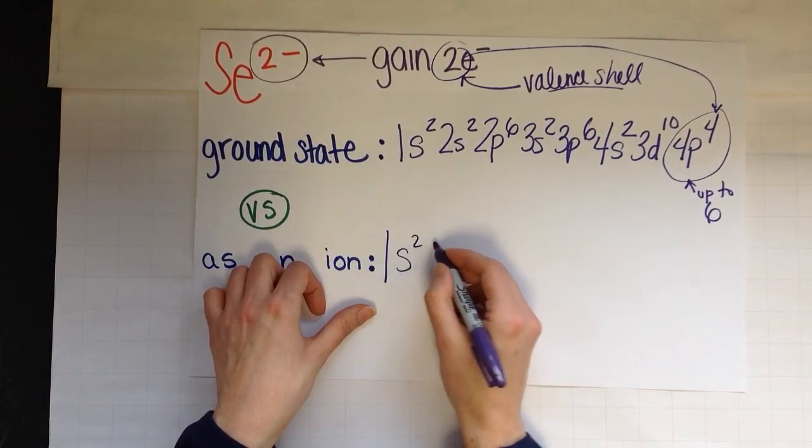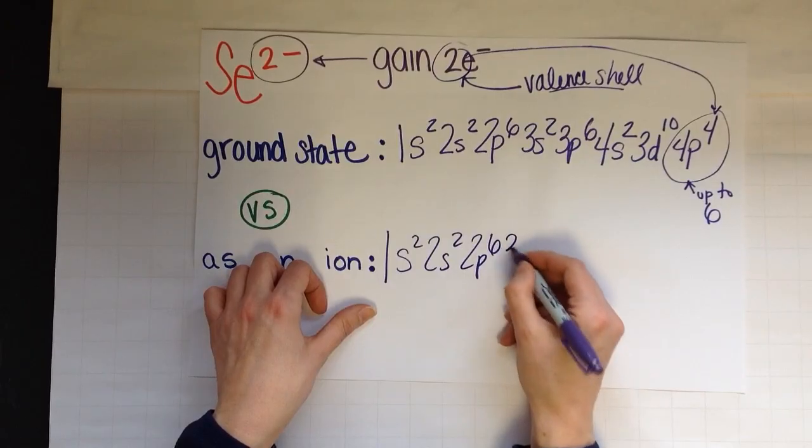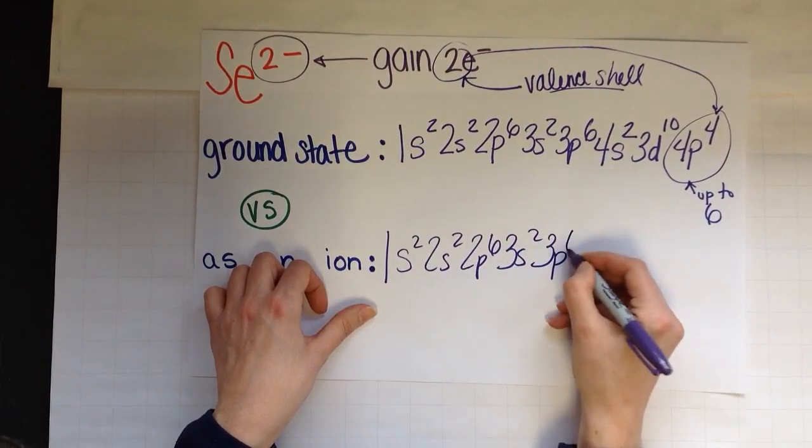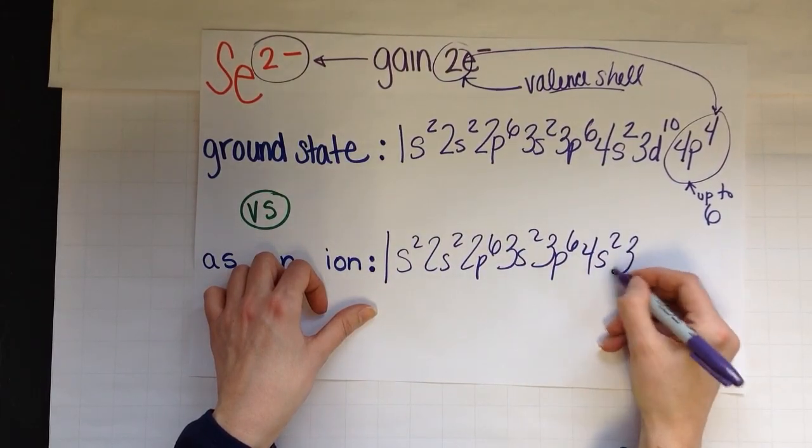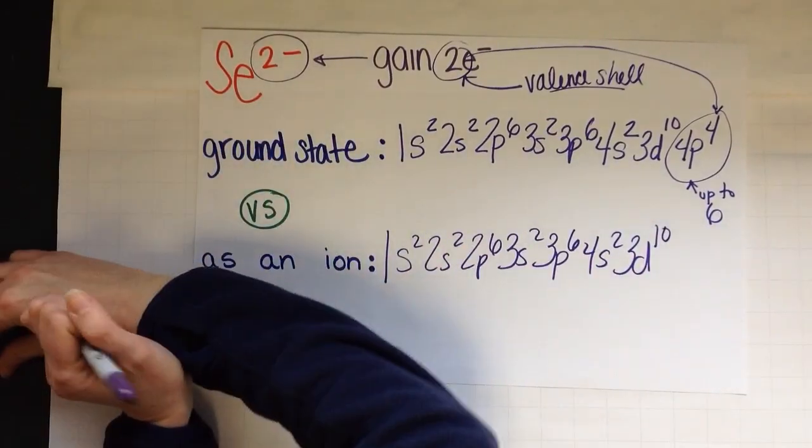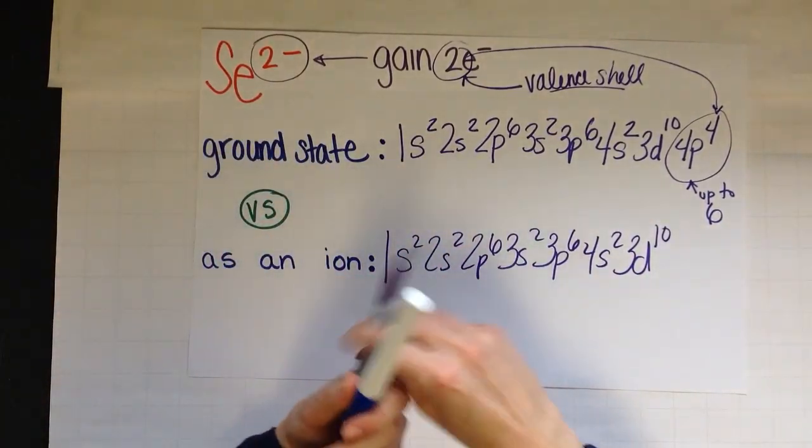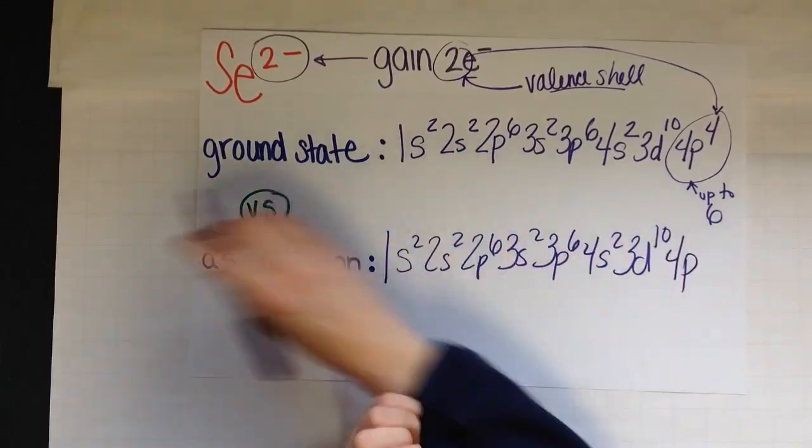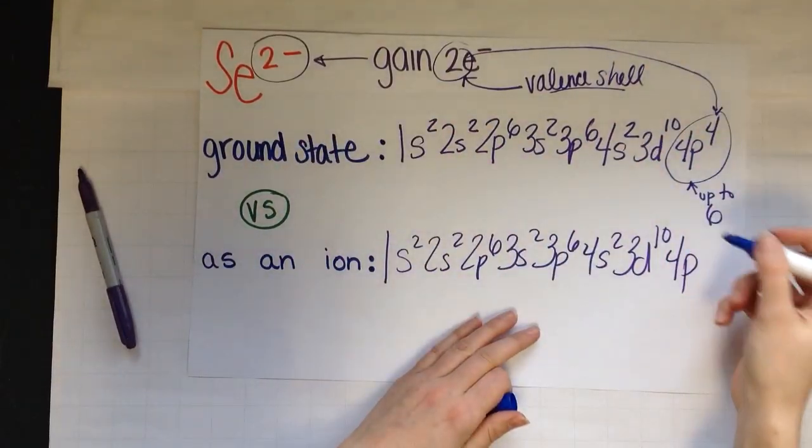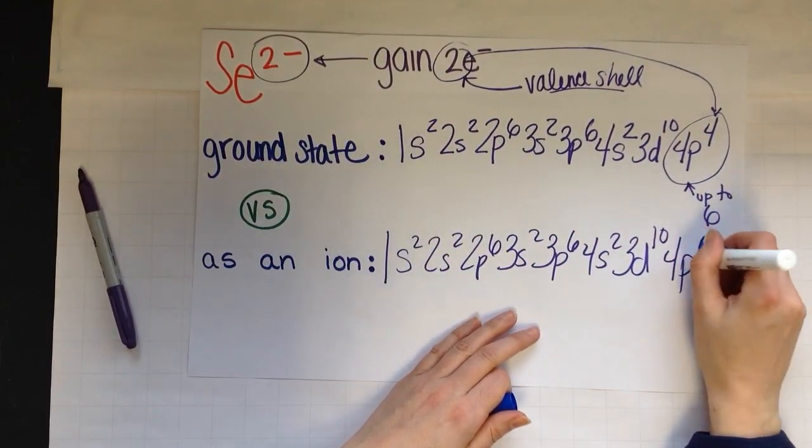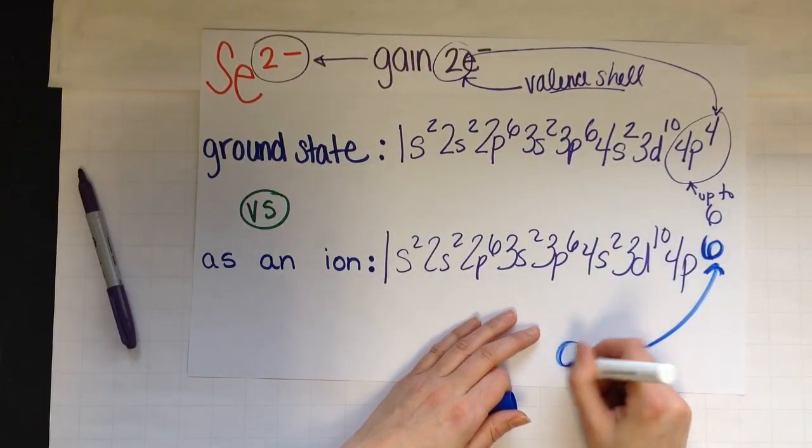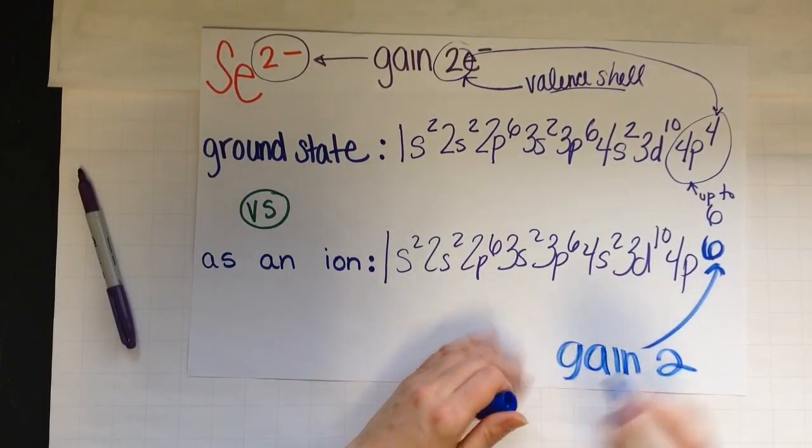So now watch, I'm going to add my two electrons into that sublevel because its orbitals can hold more. So 1s2, 2s2 stays the same, 2p6, 3s2 stays the same. All of this is the same. And now here's the new part. 4p stays the same, but I've gained the two. So 4 plus 2 makes 6. Gain the two electrons.